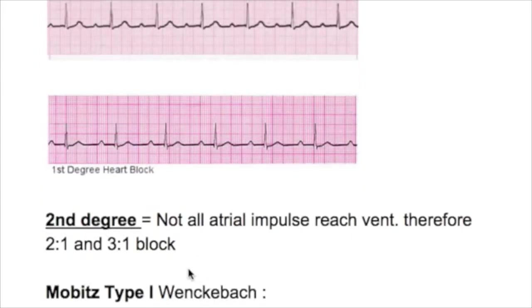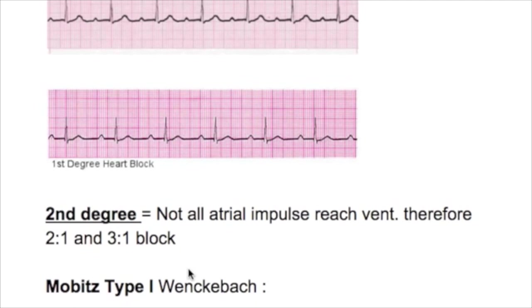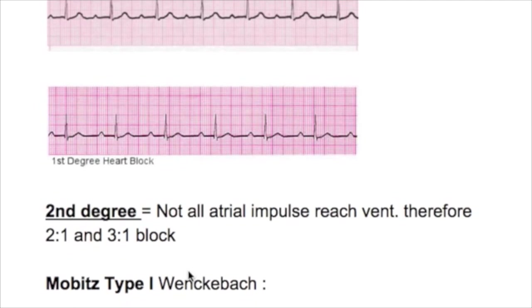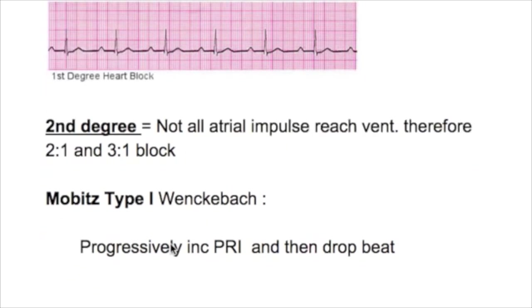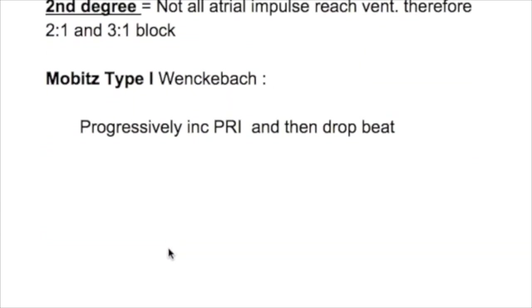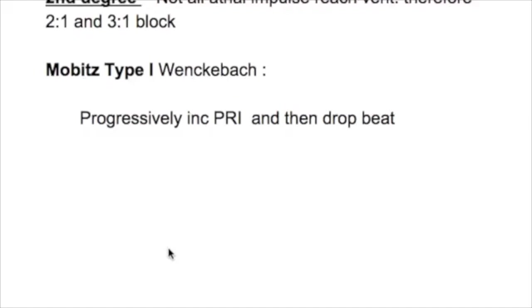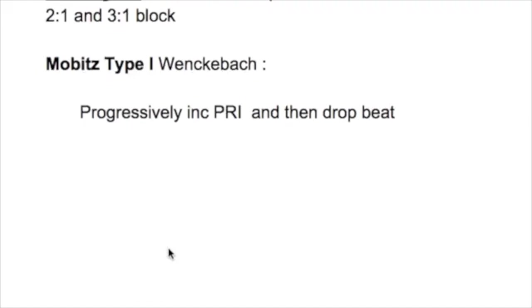In second degree block, not all impulses reach the ventricles; therefore there is a 2:1 or 3:1 block. There are two types of second degree block: Mobitz type one (Wenckebach) and Mobitz type two.